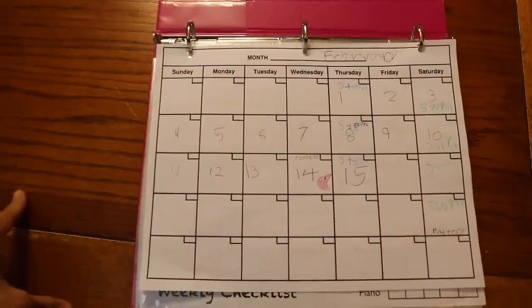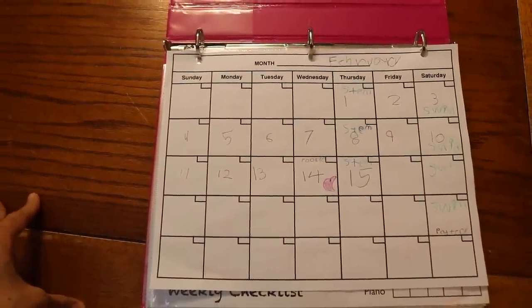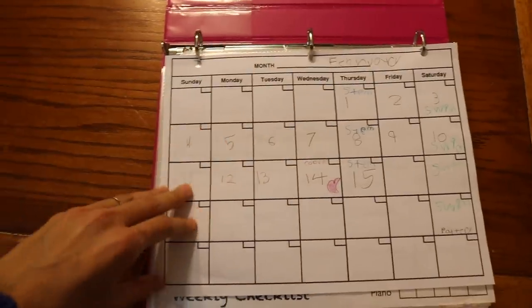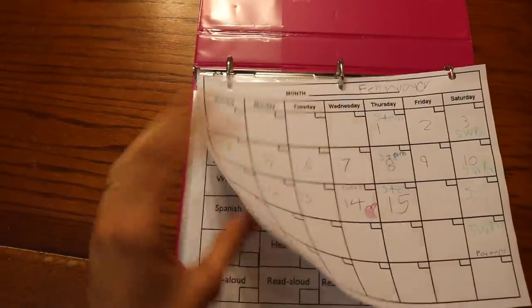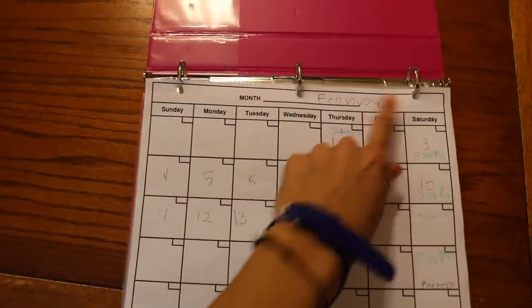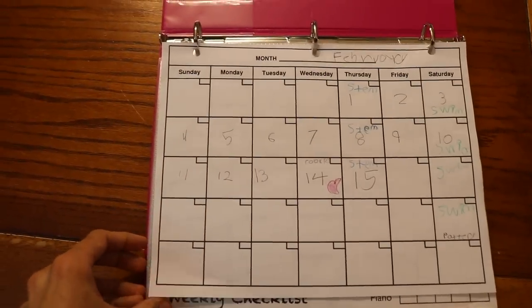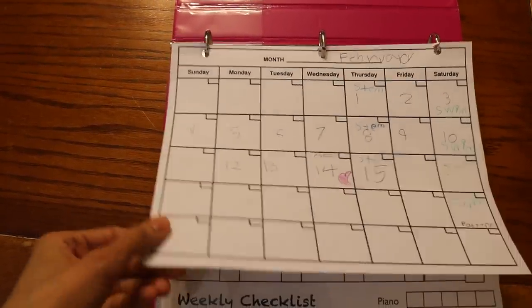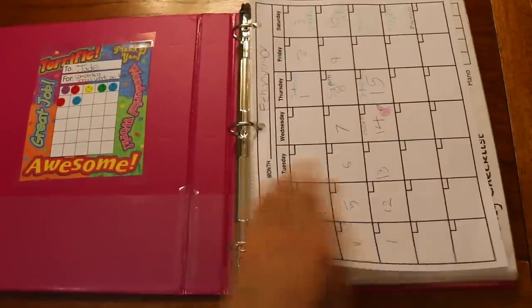If you have younger ones you can go over the days of the week, what was yesterday, what's tomorrow, and so on, so it's very handy. This is actually looking apart here. If any of you guys know what I can put here, maybe some hole reinforcers, let me know in the description box. I've been looking for something to make sure that these sheets don't keep ripping off.